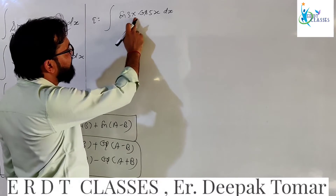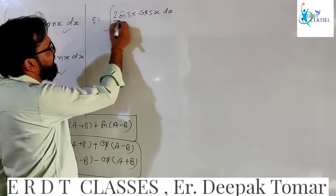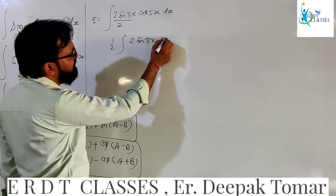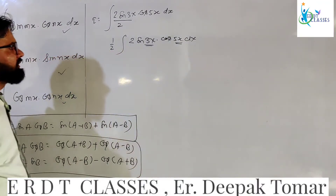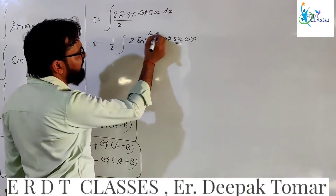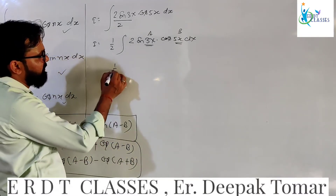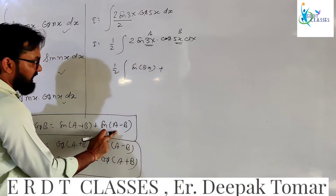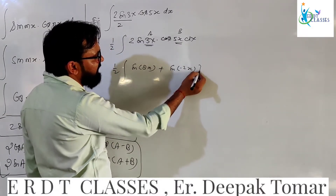Here is a question: integrate sin 3x cos 5x dx. When you have a sin times cos form, the first thing we do is divide and multiply by 2. So it becomes (1/2) times 2 sin 3x cos 5x dx. Using 2 sin A cos B = sin(A+B) + sin(A−B), this becomes (1/2) times [sin(8x) + sin(−2x)] dx.